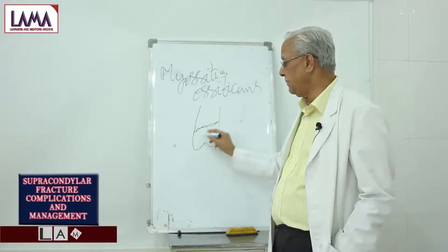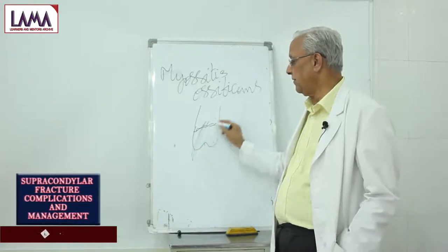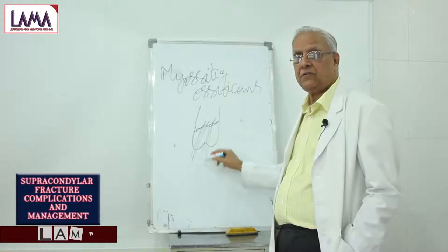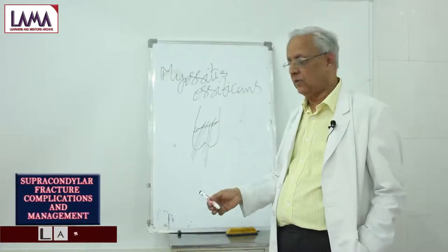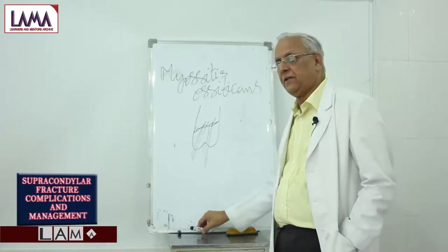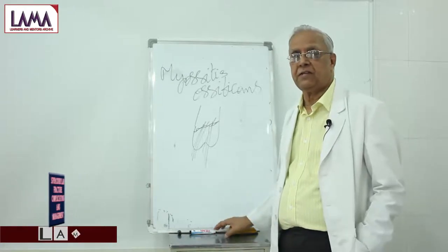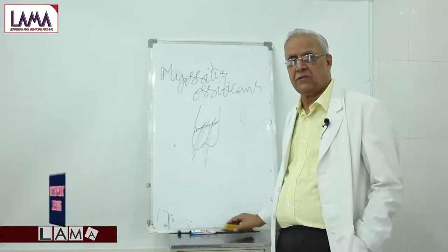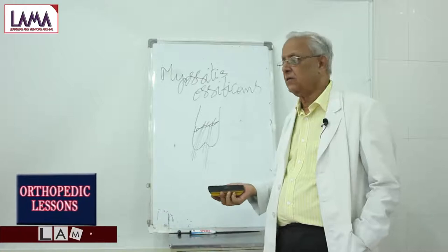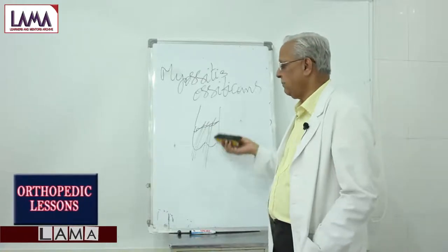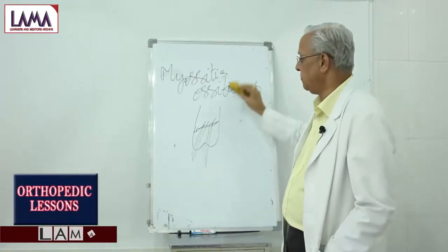When they do massage, what happens? Bone forms in front of the elbow. This acts more as a block — like a door stopper, so that the door would not get closed. Such a bone block may form, and it is a very difficult complication to deal with.